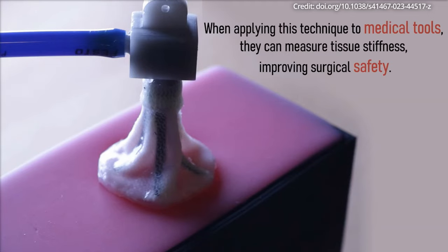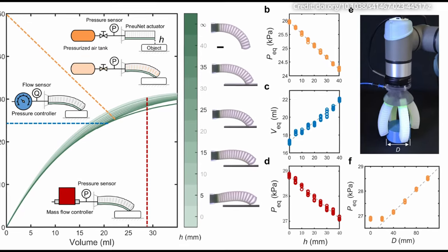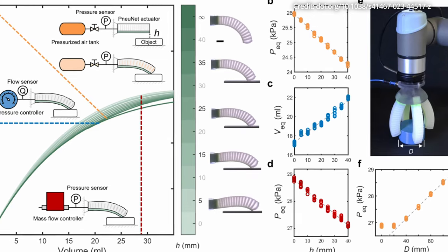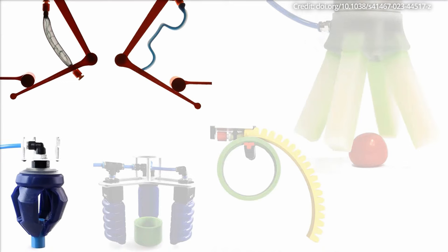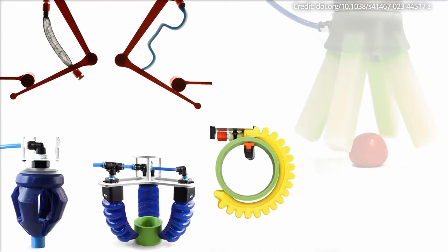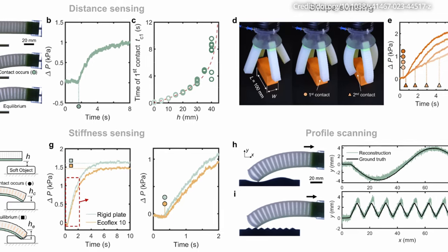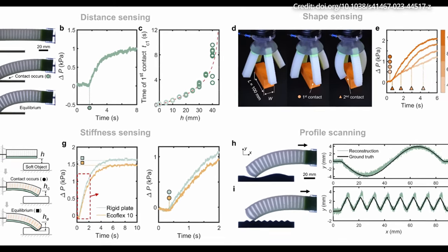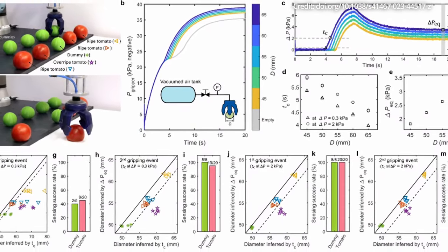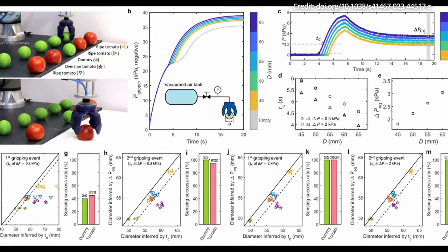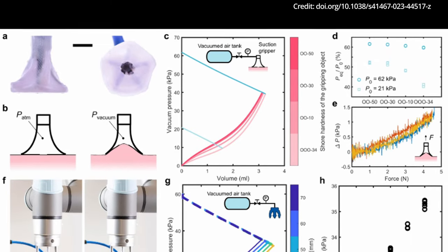Imagine a world where robots, equipped with this sensor-free technology, perform delicate surgeries, assist in intricate manufacturing processes, or even provide care in a personal setting. The ability to gauge and adapt to the environment without complex embedded sensors allows for a new level of precision and safety in tasks that require a gentle touch. While the technology was first demonstrated with the task of picking tomatoes, its potential extends into much more complex domains. In healthcare, soft robotic tools can now perform minimally invasive procedures with unprecedented sensitivity, reducing the risk of tissue damage and improving patient outcomes. This sensor-free approach could also revolutionize manufacturing, where accurately assessing and manipulating delicate components can significantly enhance production quality and efficiency.